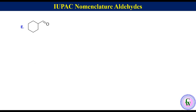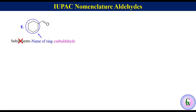Compound E — it is the compound in which CHO is attached to a ring. As we have already discussed, the IUPAC name of such compounds consists of substituents + name of ring + 'carbaldehyde'. In this molecule there is no substituent. The name of the ring is cyclohexane, so the IUPAC name of this compound will be cyclohexanecarbaldehyde.